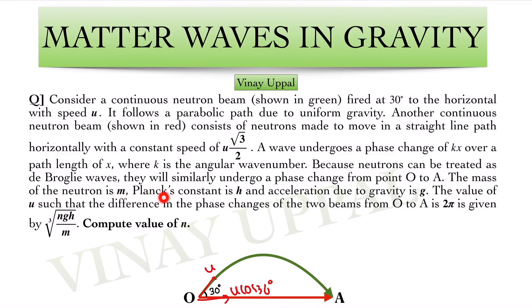Both these beams are going to undergo a phase change as they travel from O to A. The mass of the neutron is m, Planck's constant is h and the acceleration due to gravity is g. The value of u such that the difference in the phase changes of the two beams from O to A is 2π.